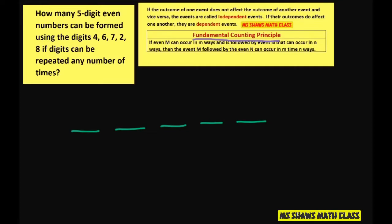The only constraint is our available digits are 4, 6, 7, 2, and 8. To be an even number, this last digit has to be even.